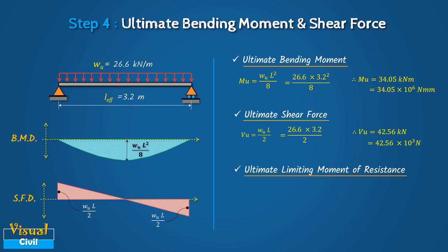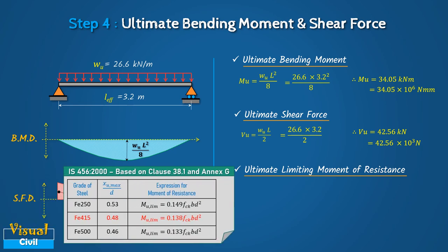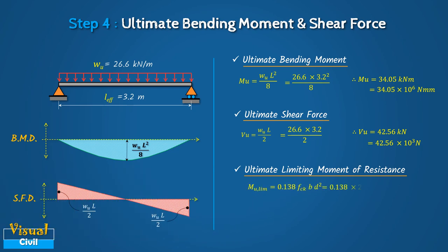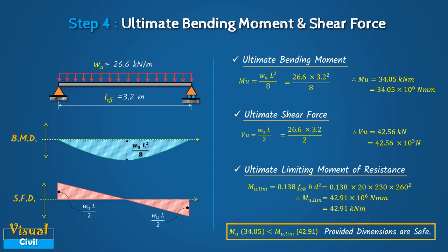Finally, to check the adequacy of the assumed cross-section size, compute the ultimate limiting moment of resistance. Based on clause 38.1 and annex G of IS456 for Fe415 grade steel, the moment of resistance equals 0.138 × FCK × b × d². By putting all the values, we get the moment of resistance equal to 42.91 kNm, which is more than the acting bending moment of 34.05 kNm. Hence, the initially assumed sectional dimensions are adequate and safe, and the section is under-reinforced.